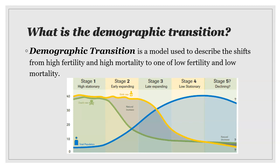In stage three of the demographic transition model, death rates are low and birth rates decrease, usually as a result of improved economic conditions, an increase in women's status and education, and access to contraception. Examples of stage three countries are Botswana, Colombia, India, Jamaica, Kenya, Mexico, South Africa, and the United Arab Emirates.